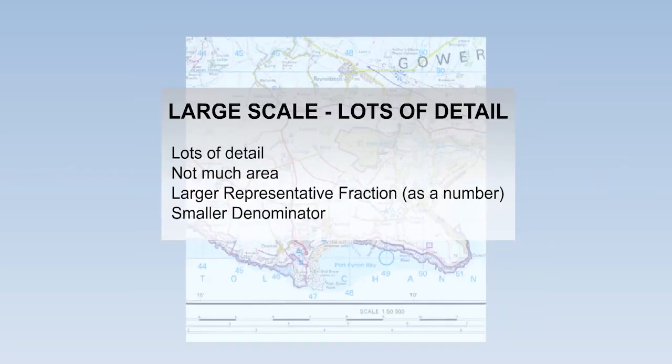A large scale map shows a lot of detail, but not much area. It has a larger representative fraction as a number, but when expressed as a fraction, it has a smaller denominator.